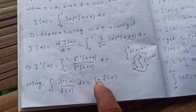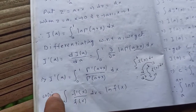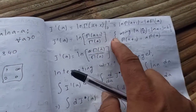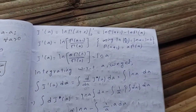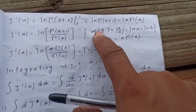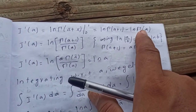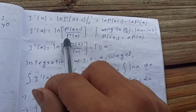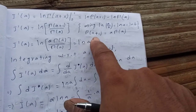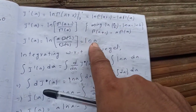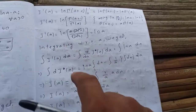Using the property that the integral of f prime(x) over f(x) dx equals log f(x), we get I prime of a equals log gamma(a plus x) evaluated from zero to one. That gives log gamma(a plus one) minus log gamma(a), which by logarithm properties equals log of [gamma(a plus one) / gamma(a)]. Using the gamma recurrence gamma(a plus one) = a·gamma(a), the gamma(a) terms cancel, giving I prime of a equals log(a).